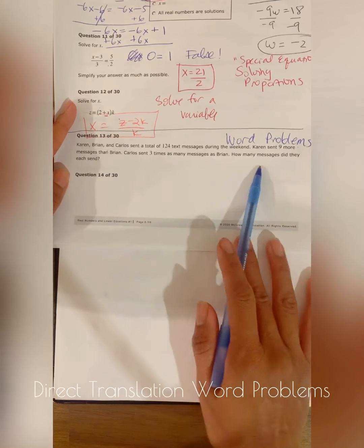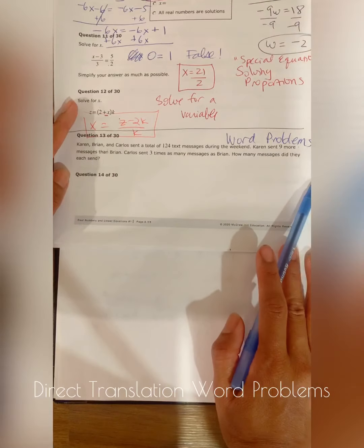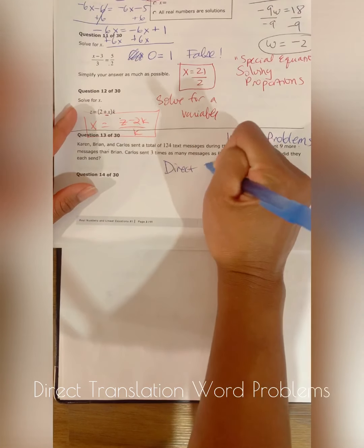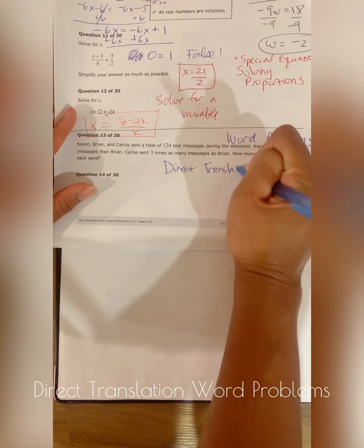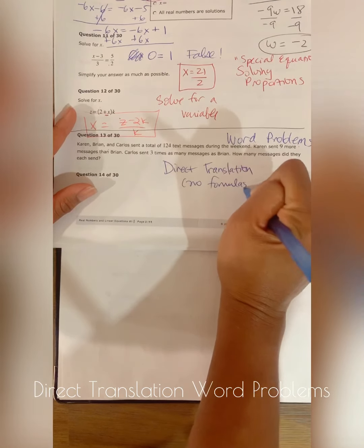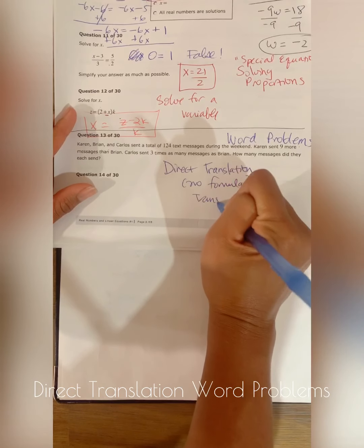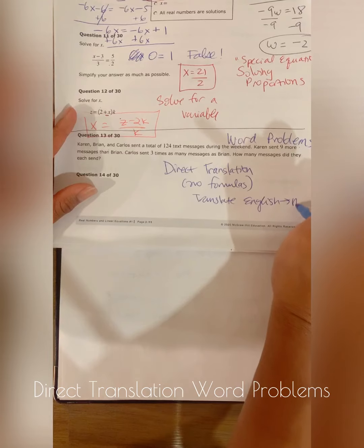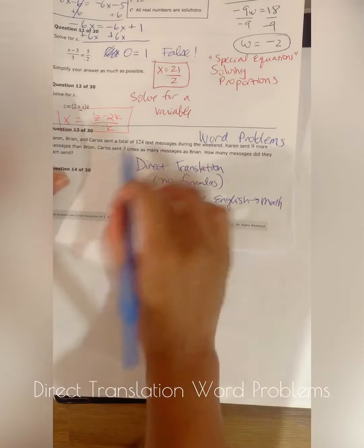So I'm first skim reading the problem just to see what kind of a problem it is. So this is what we call a direct translation word problem. That means that there are no formulas and all you need to do is translate English to math. You're just going to read it and translate the English words to math. There is no formula for this problem.